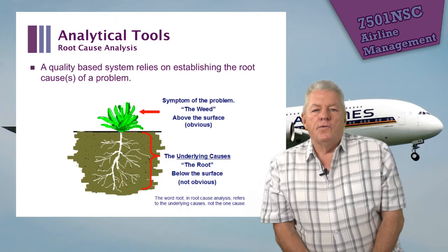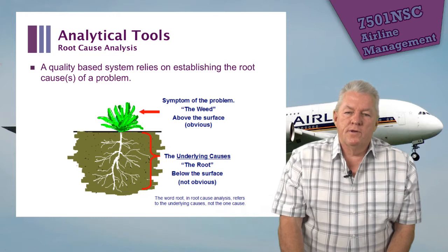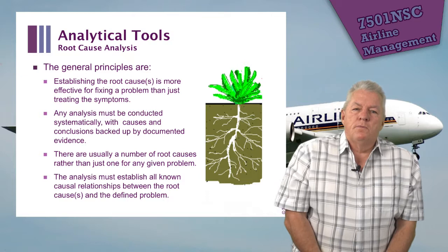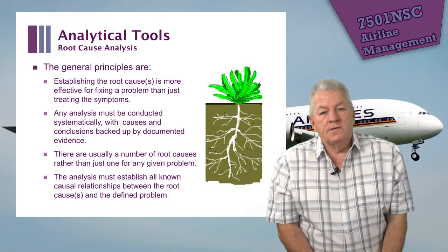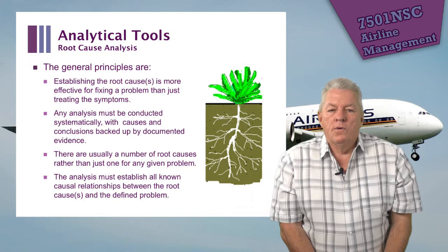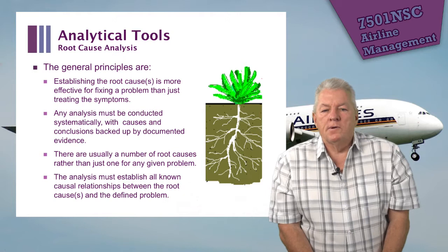Let's move on to root cause analysis. It's a quality-based system which relies on establishing the root causes of a problem. We see the weed above the surface, but below it there are all of these underlying causes — the roots — which are not as obvious as the weed itself. The general principles are that establishing the root cause is more effective than just treating the symptoms. Any analysis must be conducted systematically with causes backed up by documented evidence. There's usually a number of root causes, and the analysis must establish all known causal relationships between the root causes and the defined problem.